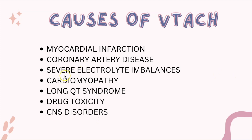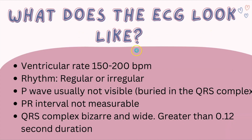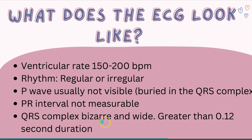If someone has ventricular tachycardia due to an electrolyte imbalance, you need to correct the underlying cause if possible. On the ECG, the ventricular rate is 150 to 200 beats per minute. The rhythm can be regular or irregular. The P wave is usually not visible because it's buried in the QRS complex. The PR interval is not measurable, and the QRS complex is bizarre and wide — greater than 0.12 seconds in duration.